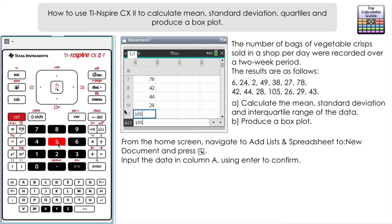Once we've inputted the data, just double check here. We've got 14 entries where we're looking at a two-week period, so that's 14 days, so that's looking good. Now we're going to find some summary statistics. We need to go to Menu and then scroll down here to Statistics.